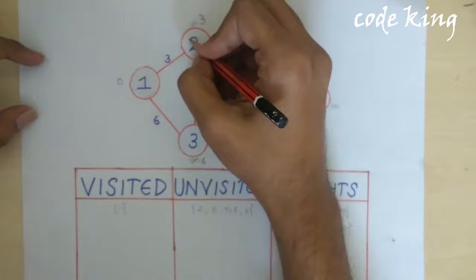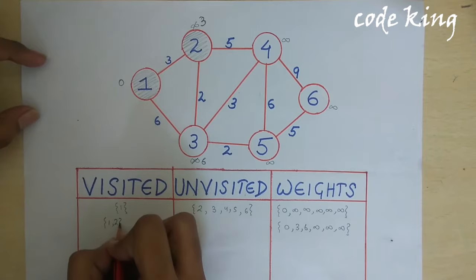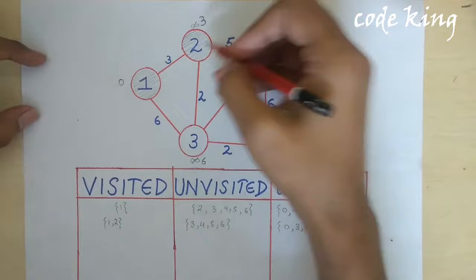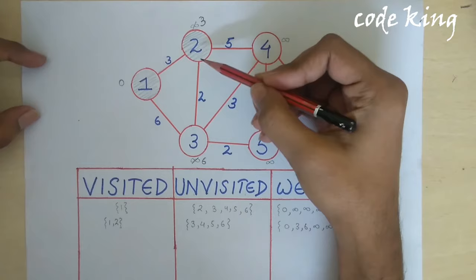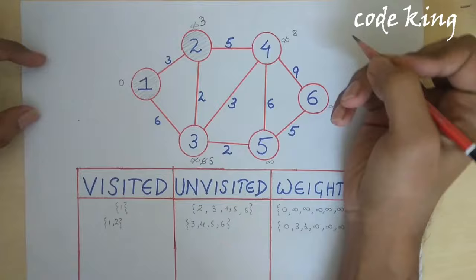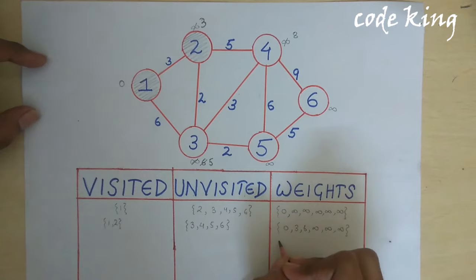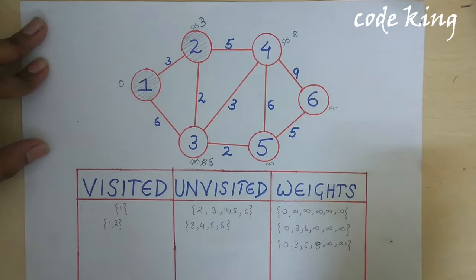The minimum weight is 3, associated with node 2, so we take node 2 into consideration and mark it visited. Now exploring all the unvisited neighbors of node 2. Node 3: 3 plus 2 is 5, which is less than 6, so we update it. Another neighbor: 3 plus 5 is 8, less than infinity, so we update it. We skip the already-visited node. The new weights are: 0, 3, 5, 8, infinity, infinity.